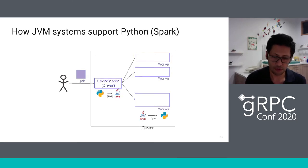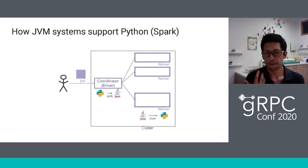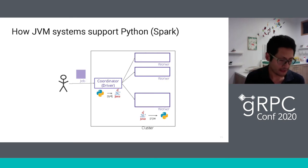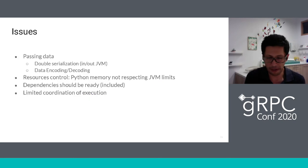This is a good solution — it solves the problem — but it has some issues. One issue is passing data back and forth, which can cause double serialization or at least requires getting data in and out of the JVM. Also, you lose control of resources because Python memory is outside the JVM and won't respect JVM limits. More importantly, dependencies may not be ready in the cluster when running the job — this is another issue not solved by this approach.